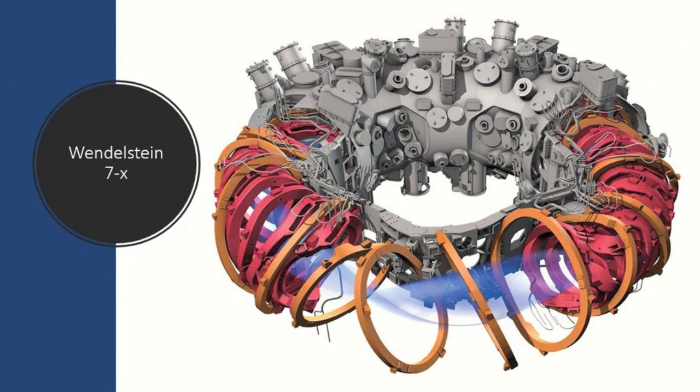The Wendelstein 7-X is a Stellarator-style reactor located in Germany. It took 19 years to build with a cost of 1.2 billion euros and is currently operational. The claim is that the reactor will be able to sustain fusion for half an hour.